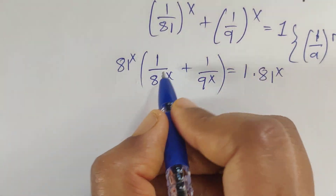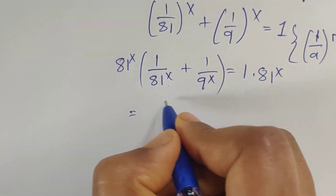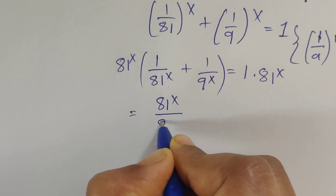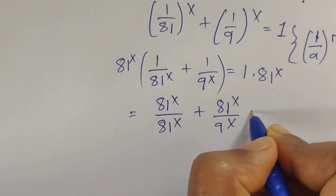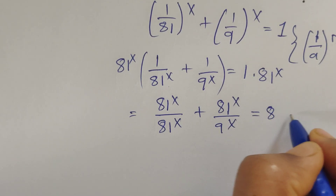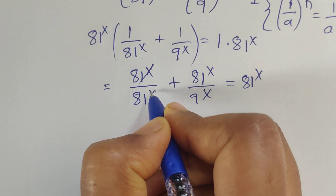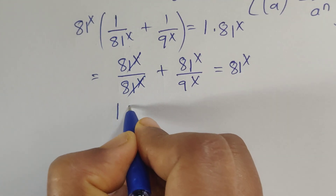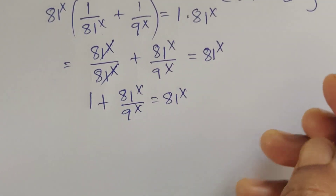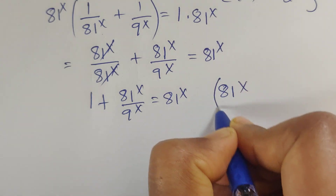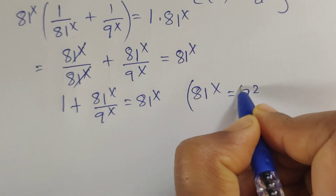So then we will get 81 to the power of x times 1 by 81 to the power of x. That gives 81 to the power of x divided by 81 to the power of x, plus 81 to the power of x divided by 9 to the power of x, equal to 1 times 81 to the power of x. Now here 81 to the power of x gets cancelled, so we get 1 plus 81 to the power of x divided by 9 to the power of x equal to 81 to the power of x.